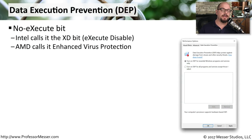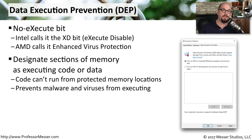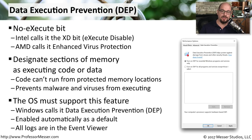Many operating systems integrate with a CPU to provide data execution prevention, or DEP. You may see this referred to as the no-execute bit in the CPU — Intel calls this the XD bit (execute disable) and AMD calls it enhanced virus protection. This allows the operating system and CPU to work together to allocate a specific section of memory for executables. If malware tries to execute in an area not allocated for executables, it will be flagged by DEP and prevented from infecting the system. Windows calls it DEP, and all associated logs can be found in the Windows Event Viewer.